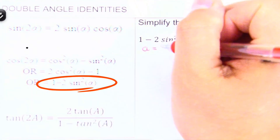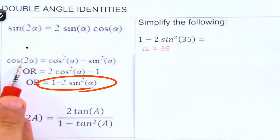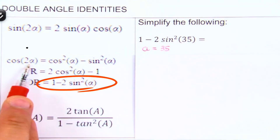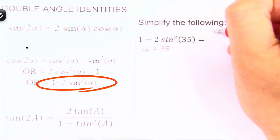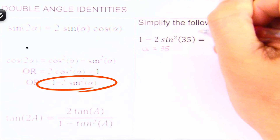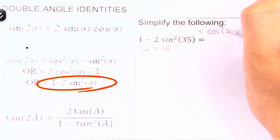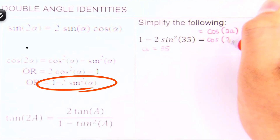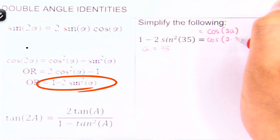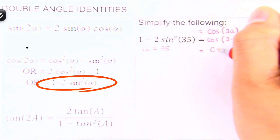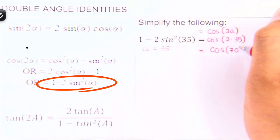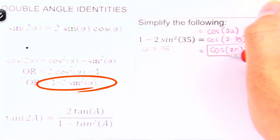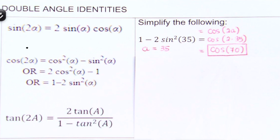Now please notice that this whole equation is equal to cosine 2A. So we can go ahead and write here cosine of 2A, because this whole thing is equal to 2A. Now we see that our A is 35, so plugging it in, this comes out cosine of 2 times 35. That's 70, so this expression is equal to cosine 70.